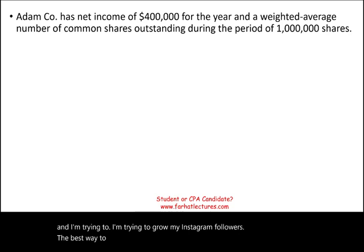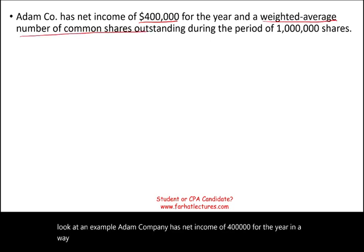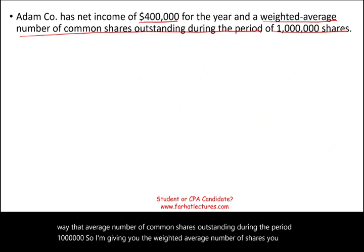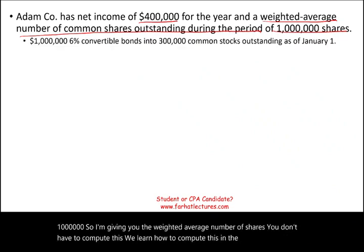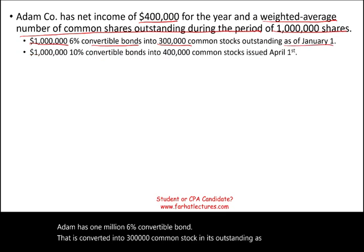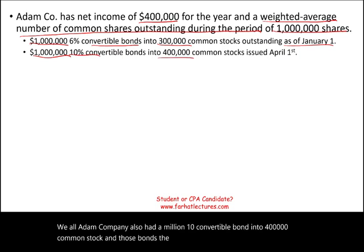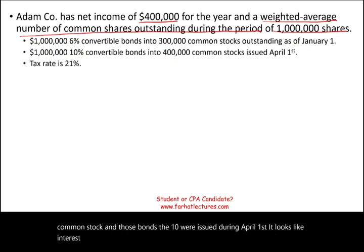Adam Company has net income of $400,000 for the year and a weighted average number of common shares outstanding of 1 million. Adam also has a $1 million 6% convertible bond that is convertible into 300,000 common shares and is outstanding as of January 1st. Adam Company also has a $1 million 10% convertible bond convertible into 400,000 common shares, but those 10% bonds were issued on April 1st. The tax rate is 21%.